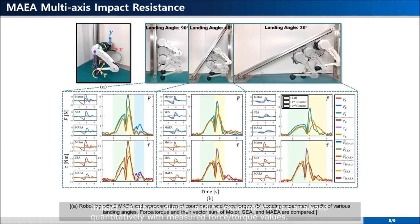Impact resistance during landing experiments was analyzed quantitatively with measured force torque values. When observing the vector sum of the force torque values, the MAEA leg transmitted 41% less impact than the motor leg case and 33% less impact than the SEA leg on average.